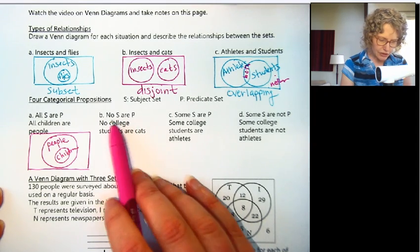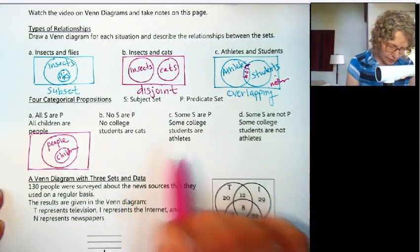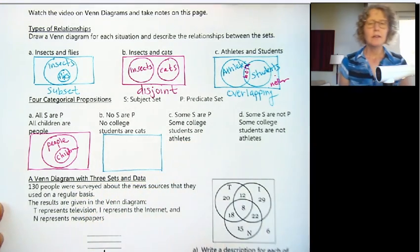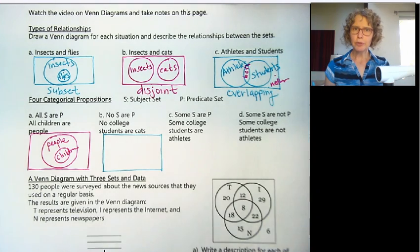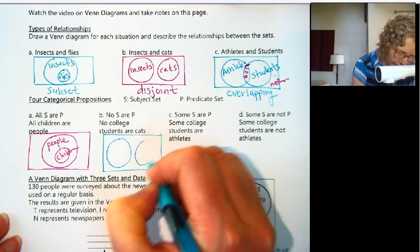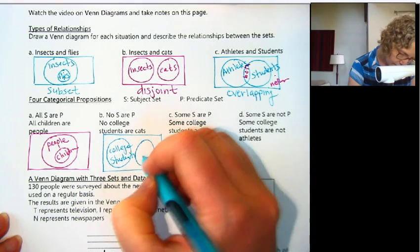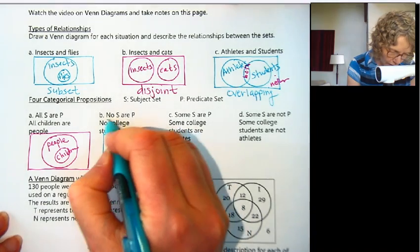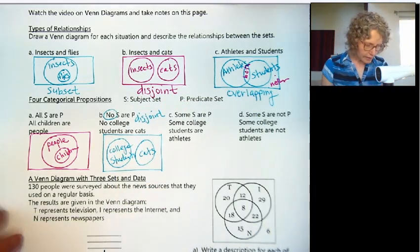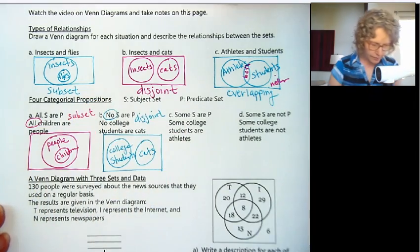The second type is 'no S are P,' or for example, 'no college students are cats.' No college students are cats — so that sounds separate, right? College students are separate from cats, kind of like the insects and the cats. No college students are cats, so these would be disjoint. The word 'no' is really a key word for disjoint, just like 'all' is a keyword for subset.